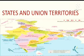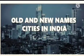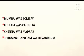In Madhya Pradesh, Indore, Gwalior, Ujjain, and Jabalpur are important cities. Now, old and new names of cities in India: Mumbai was Bombay, Kolkata was Calcutta, Chennai was Madras, and Thiruvananthapuram was Trivandrum.